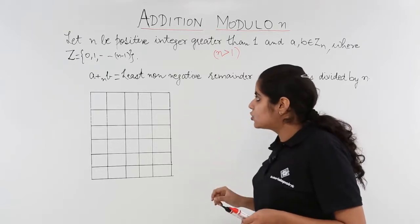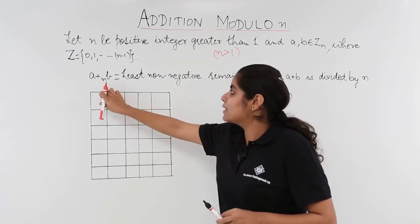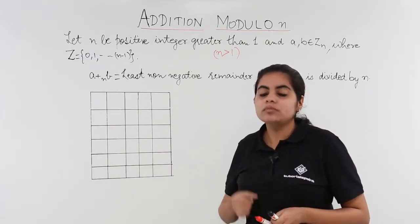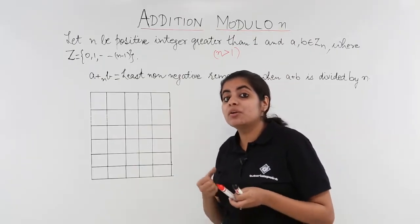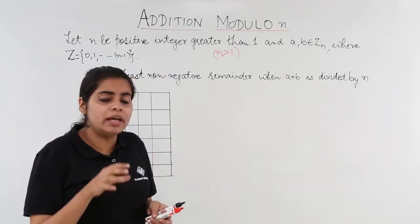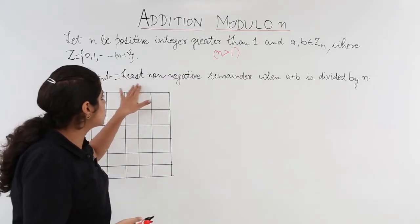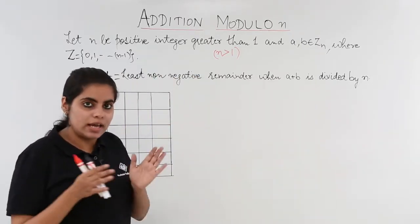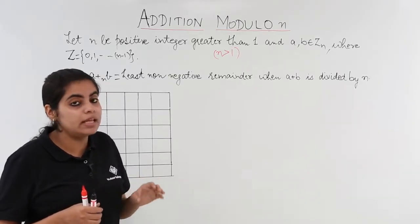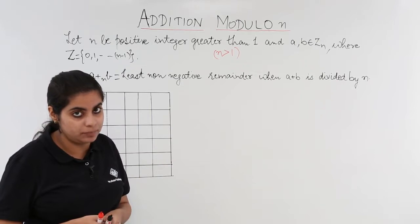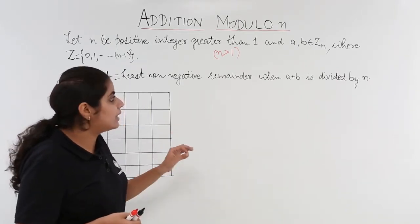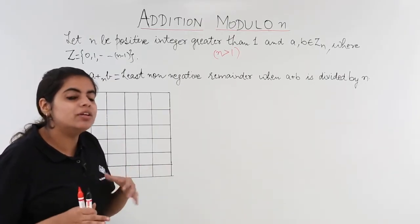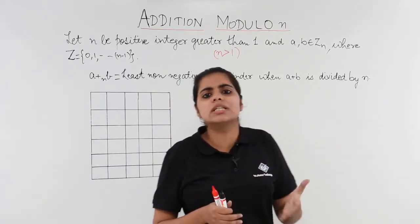Addition modulo is denoted as a plus_n b, meaning you are basically adding two things and then taking the modulo. Modulo means you find the remainder, and the remainder should be the least non-negative remainder when a plus b is divided by n. Zn is a set which has n elements ranging from 0, 1, 2 till n-1.